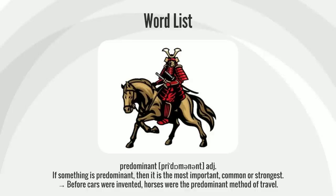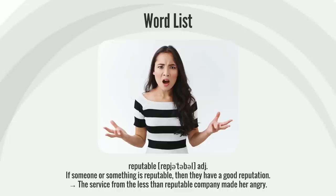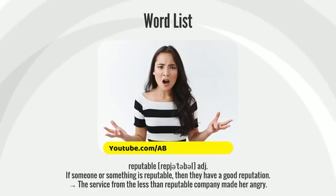If something is predominant, then it is the most important, common, or strongest. Before cars were invented, horses were the predominant method of travel.